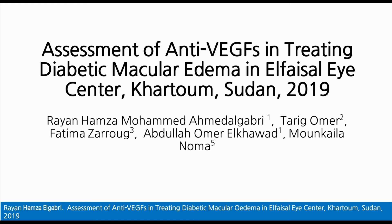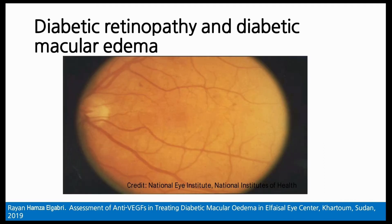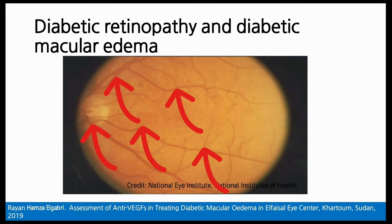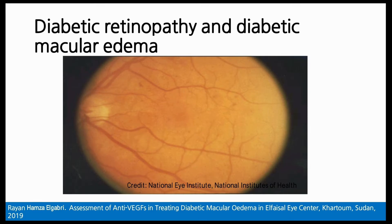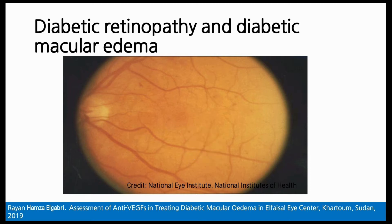Diabetic retinopathy is one of the most common complications of diabetes. It occurs when the retinal blood vessels grow, swell, and leak into the retina. Almost every patient with diabetes will develop some degree of diabetic retinopathy. Diabetic macular edema is the term used to describe diabetic retinopathy when the macula is involved, and it causes decreased or blurry vision.